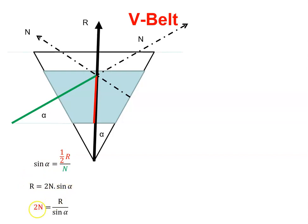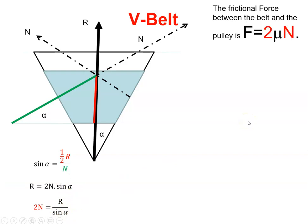Rearranging, I get 2N equals R over sin alpha. I'm going to park that for a minute. The frictional force equals μN, but with a V-belt it's twice as large because there's friction here and here, so it's 2μN. There's the frictional force, there's the reaction force on the belt, and I've already seen that 2N equals R over sine alpha.